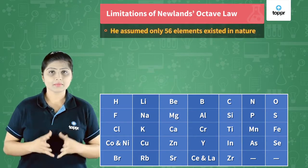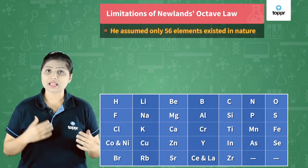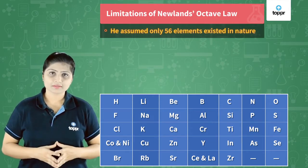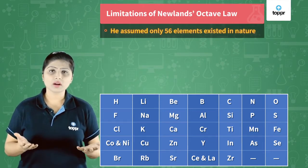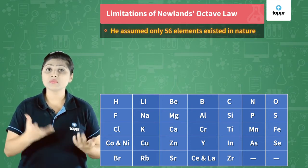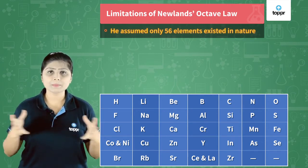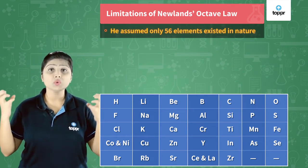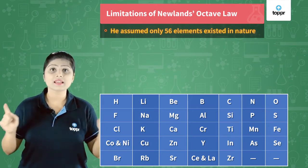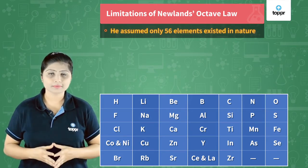At that time, only 56 elements had been discovered, and Newland thought that no more elements would be discovered further. So he did not leave any place for new elements to be accommodated in this table of the Octaves Law.